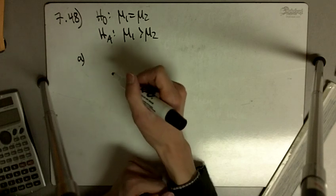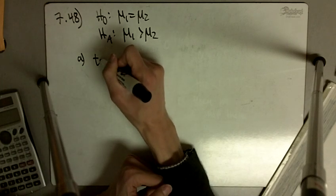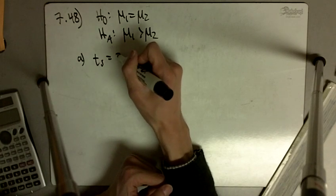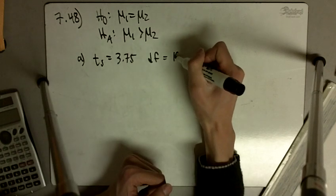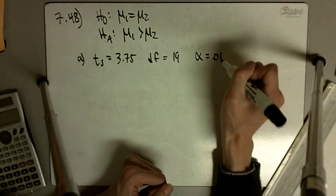Okay, under case A, our t-statistic is 3.75 and degrees of freedom is 19, and alpha level equal to 0.01.